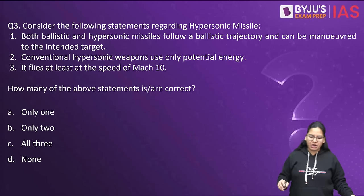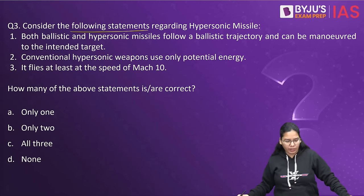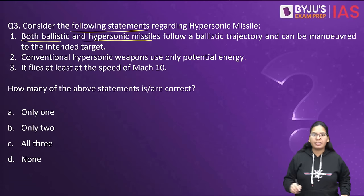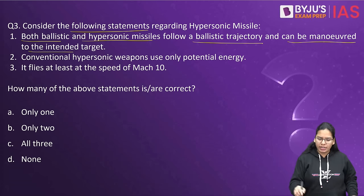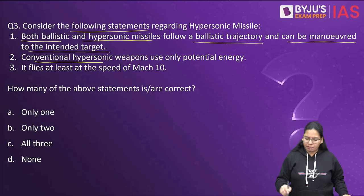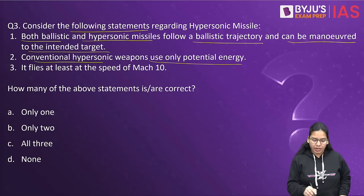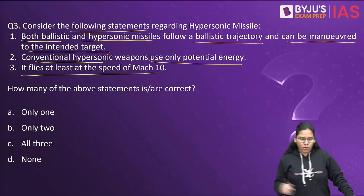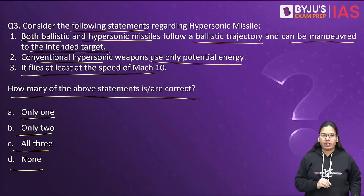Moving towards our third question: consider the following statements regarding hypersonic missiles. First statement: both ballistic and hypersonic missiles follow a ballistic trajectory and can be maneuvered to the intended target. Second statement: conventional hypersonic missiles use only potential energy. Third statement: it flies at least at the speed of Mach 10. How many of the above statements are correct — only one, only two, all three, or none?